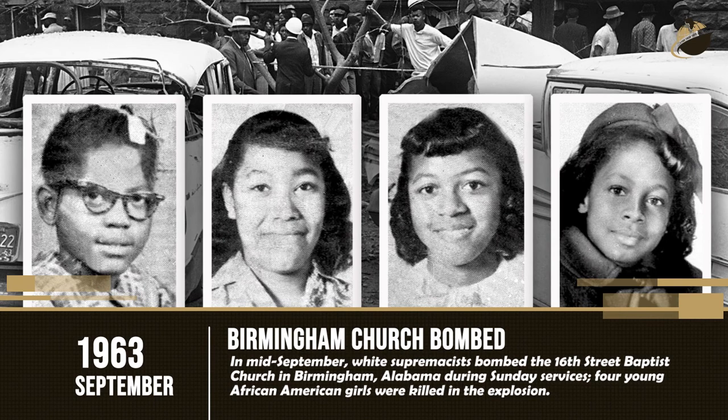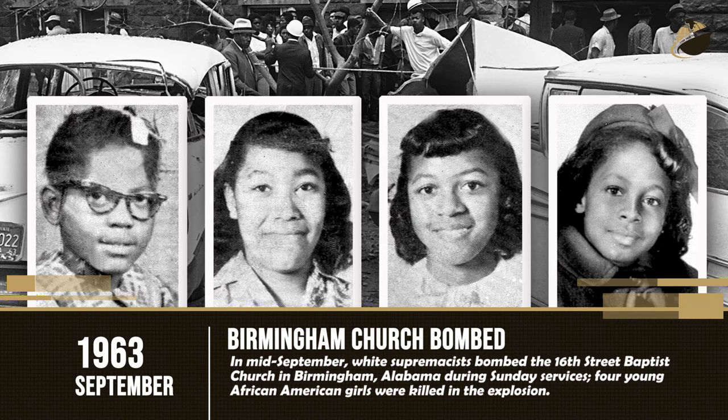1963 — Birmingham Church Bombed, September. In mid-September, white supremacists bombed the 16th Street Baptist Church in Birmingham, Alabama during Sunday services. Four young African American girls were killed in the explosion.